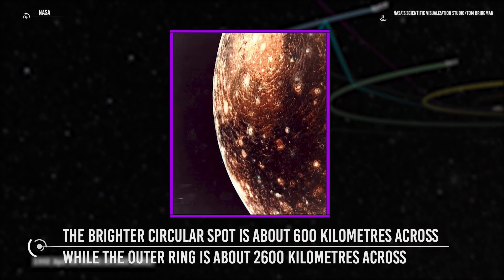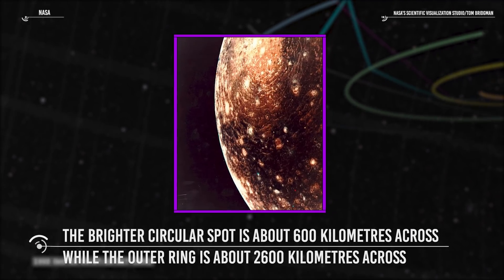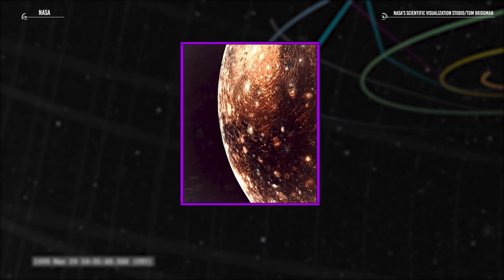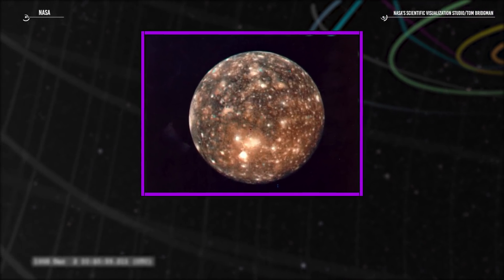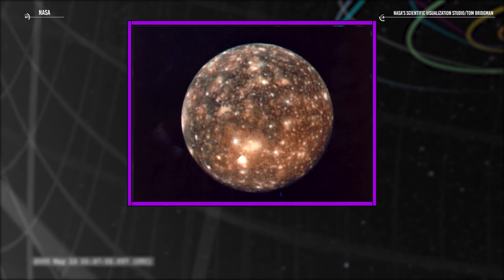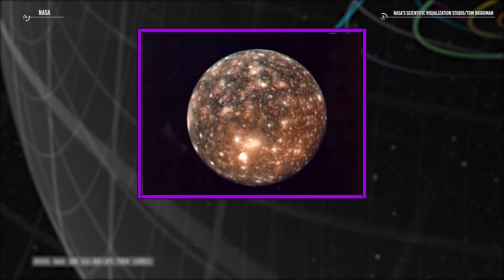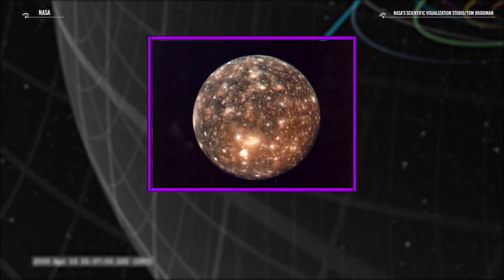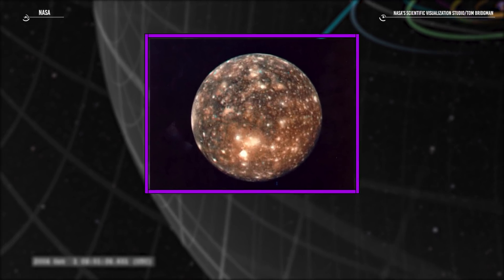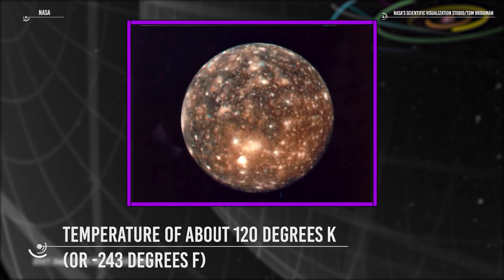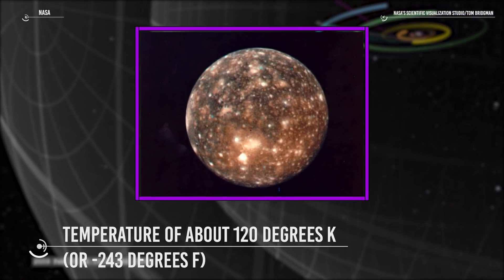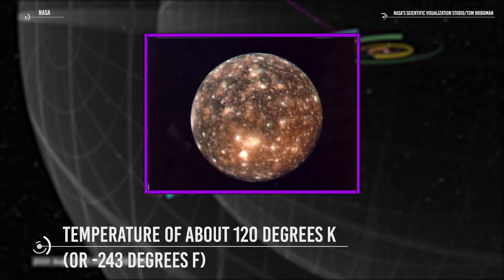This is the first recognized basin in the Jovian system and supports the concept of an old surface for Callisto. The darker color of Callisto, about half as reflective as Ganymede but still twice as bright as our moon, suggested that its upper surface was a dirty ice or water-rich rock frozen at Callisto's old surface, therefore with a temperature of about 120 degrees Kelvin or minus 243 degrees Fahrenheit at the equator.